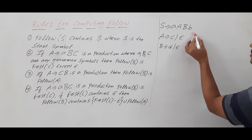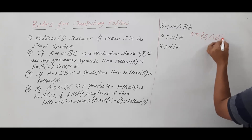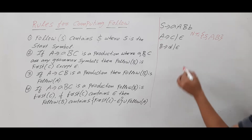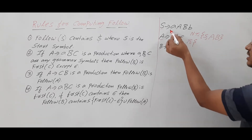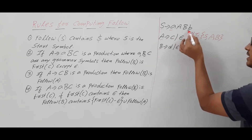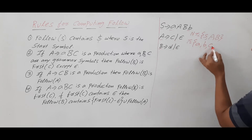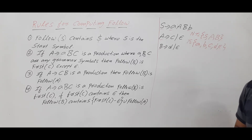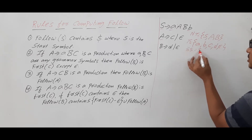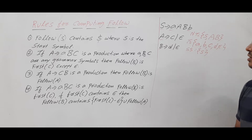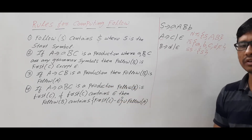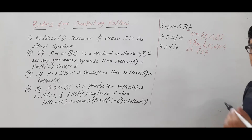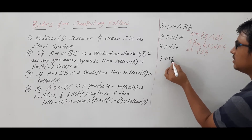The non-terminals are S, A, and B — these are the symbols on the left-hand side of the productions. The terminals are the symbols on the right-hand side other than the non-terminals: small a, small b, small c, small d, and epsilon (though we don't need to consider epsilon). S is the start symbol. When computing the FOLLOW, we also need to compute the FIRST, so let me compute the FIRST of each non-terminal first.